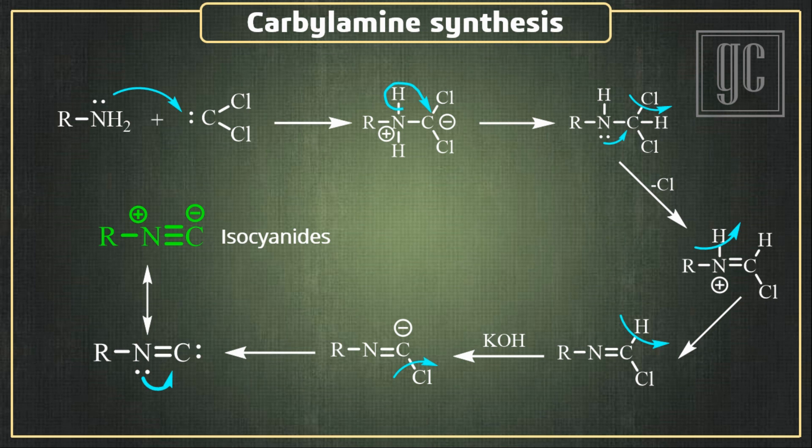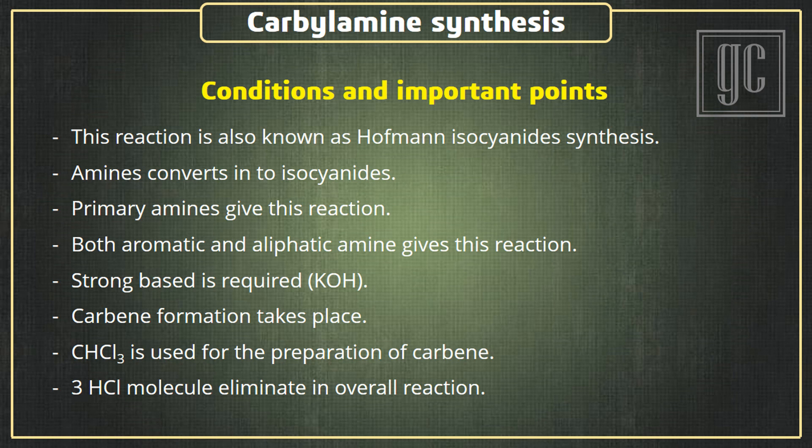The conditions and important points of the reaction: this reaction is also known as Hofmann isocyanide synthesis. Amines are converted into isocyanides; both aromatic and aliphatic primary amines give this reaction. A strong base such as potassium hydroxide is required. Carbene forms as an intermediate, and chloroform is used for the preparation of carbene.